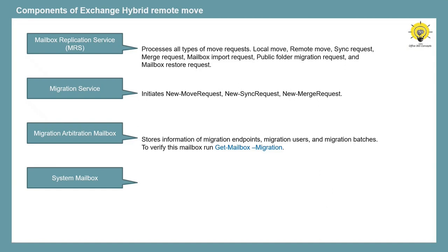If you want to verify the Migration Arbitration Mailbox, connect to Exchange Online PowerShell and run Get-Mailbox -Migration. The fourth component of Exchange Hybrid Migration is the System Mailbox, which stores information like move requests, move reports, and the sync status of the move request. So whenever you verify migration status or migration reports from Exchange Admin Center or from PowerShell, you get all the information from these components.